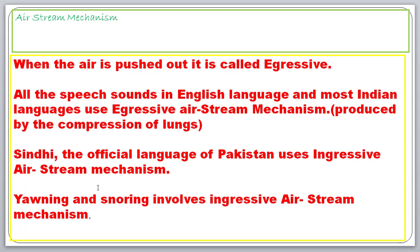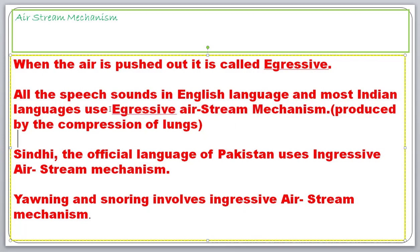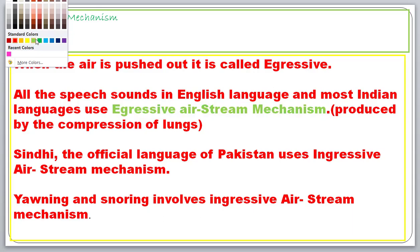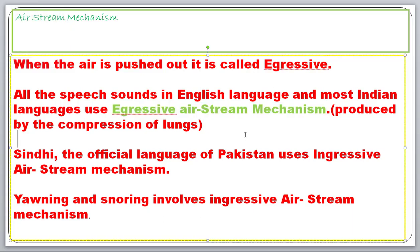All the speech sounds in English and most Indian languages use the egressive airstream mechanism. This egressive airstream mechanism is produced by the compression of the lungs. Every time a speech sound is produced in English and most Indian languages, the mechanism involved is egressive — the air is pushed out to produce the speech sound. In simple terms, egressive airstream mechanism simply refers to the process of pushing the air out from the lungs.